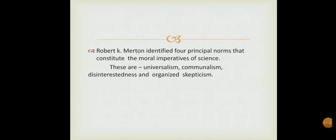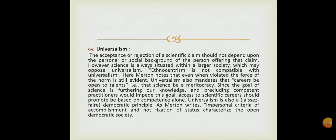The first norm is the Norm of Universalism. One of the basic norms of a scientific institution is Universalism. This norm emphasizes the universal nature of the scientific enterprise and its findings. The acceptance or rejection of scientific claims should not depend upon the personal and social background of the person offering that claim. However, science is always situated within a larger society, which may oppose Universalism.